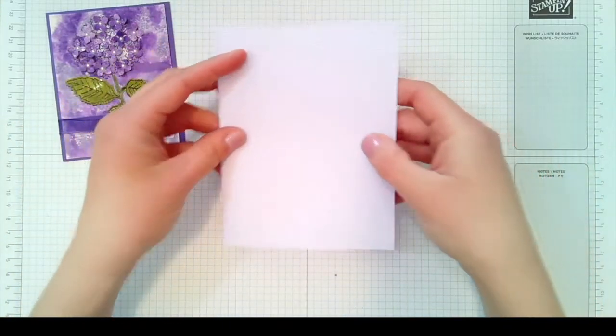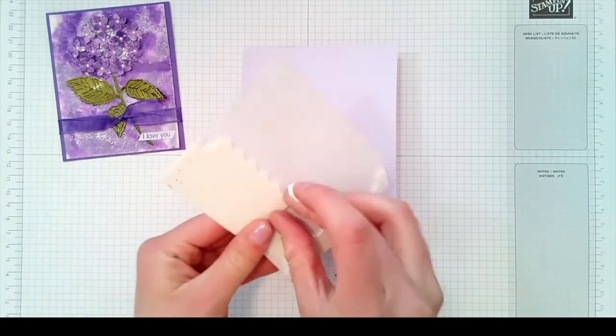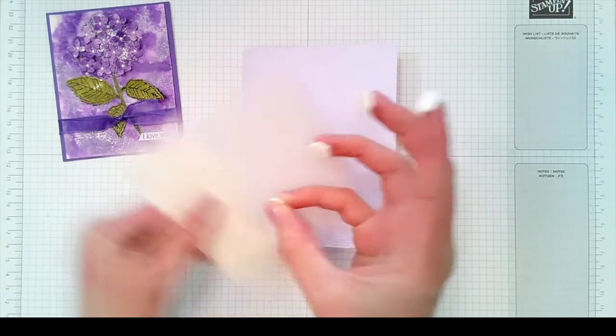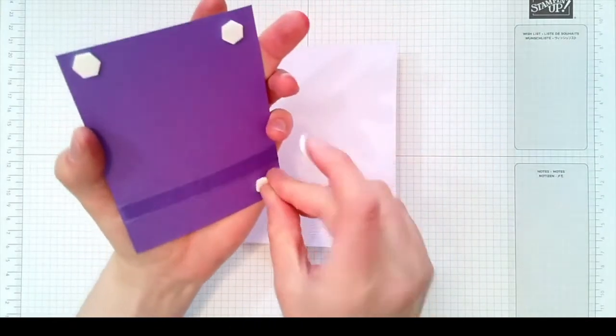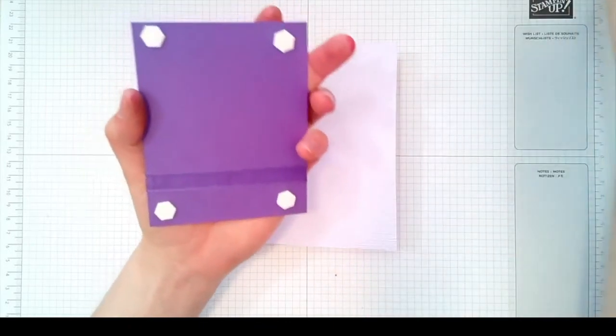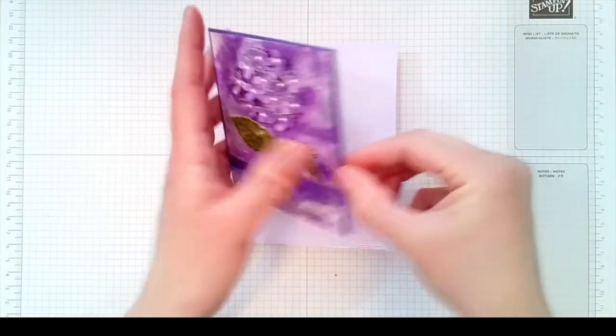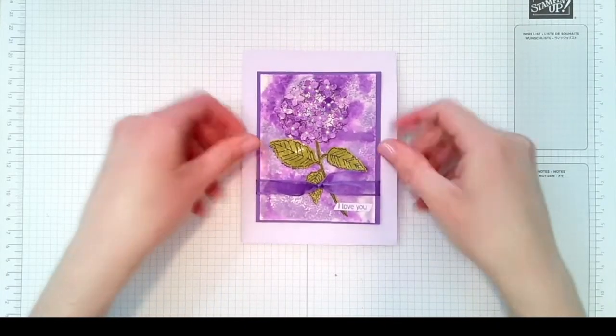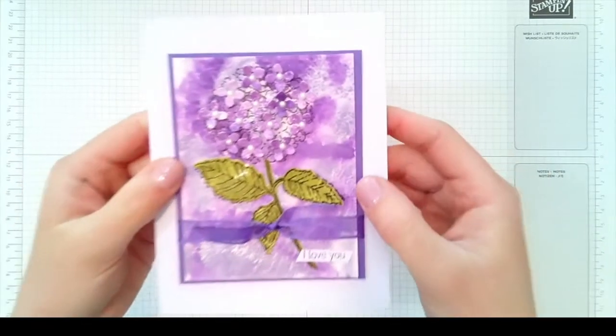The last little step is take some dimensionals here and we'll place it on the back of your card. Then you can take off the wax paper backs and place it onto the front of your card. So that is your complete finished card there. Super super pretty.